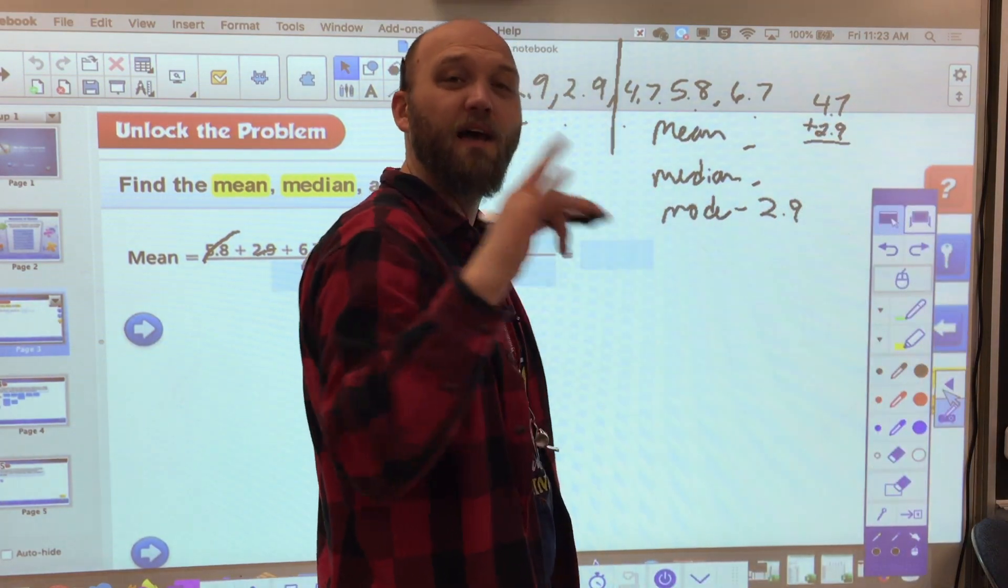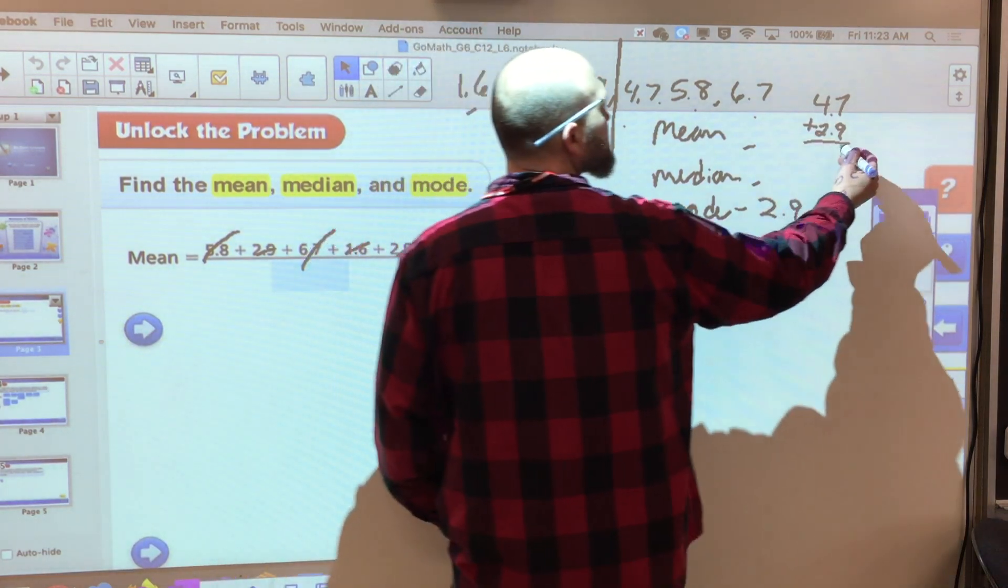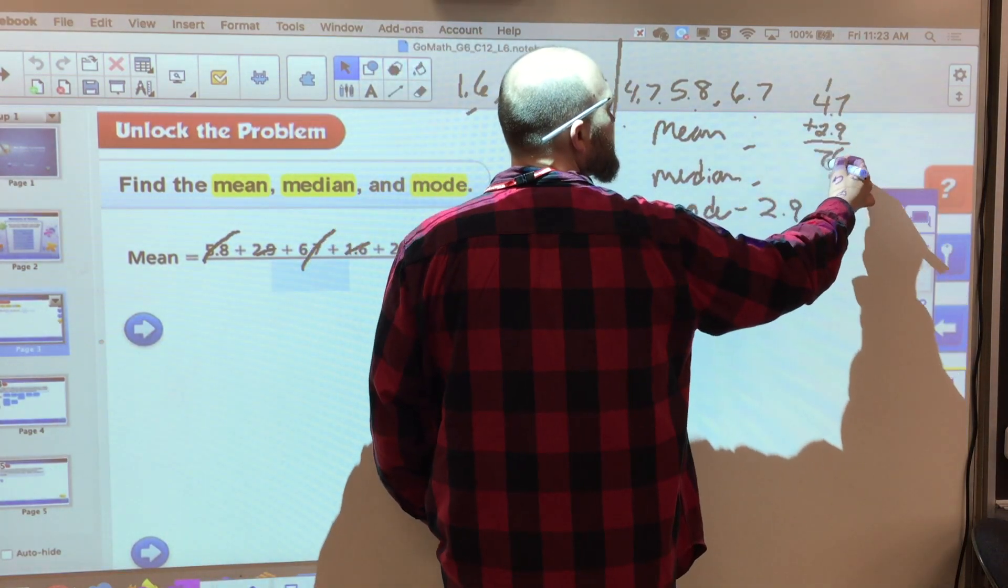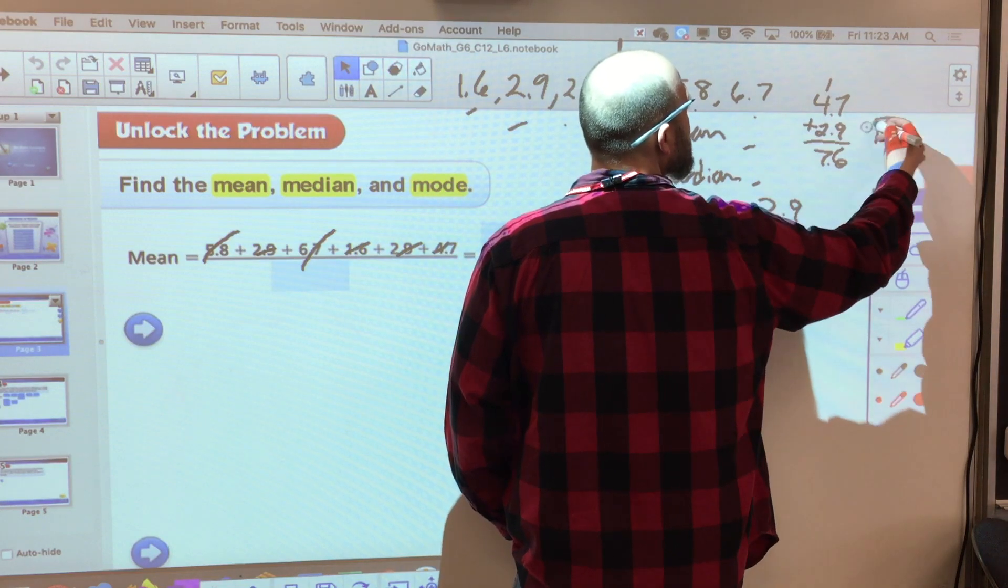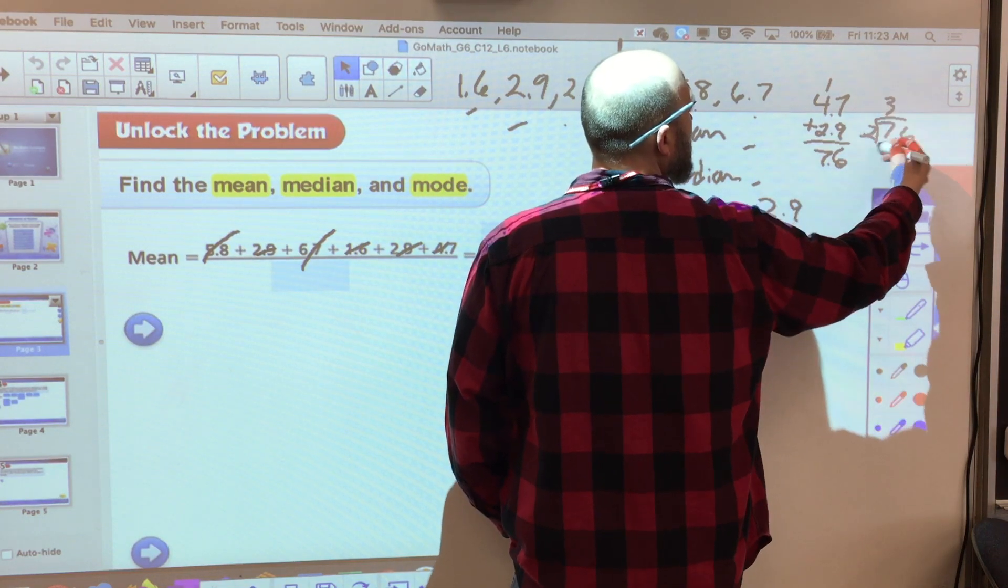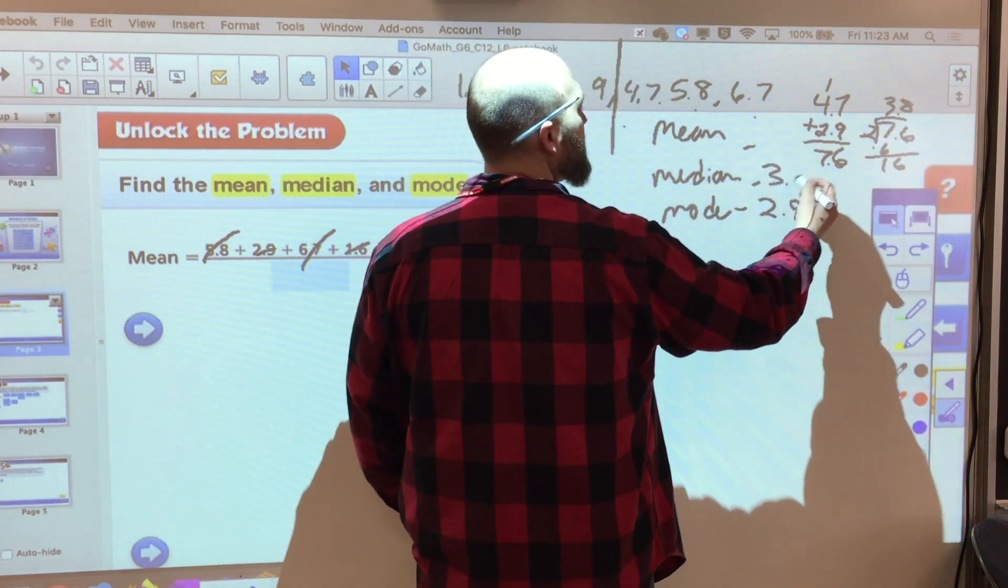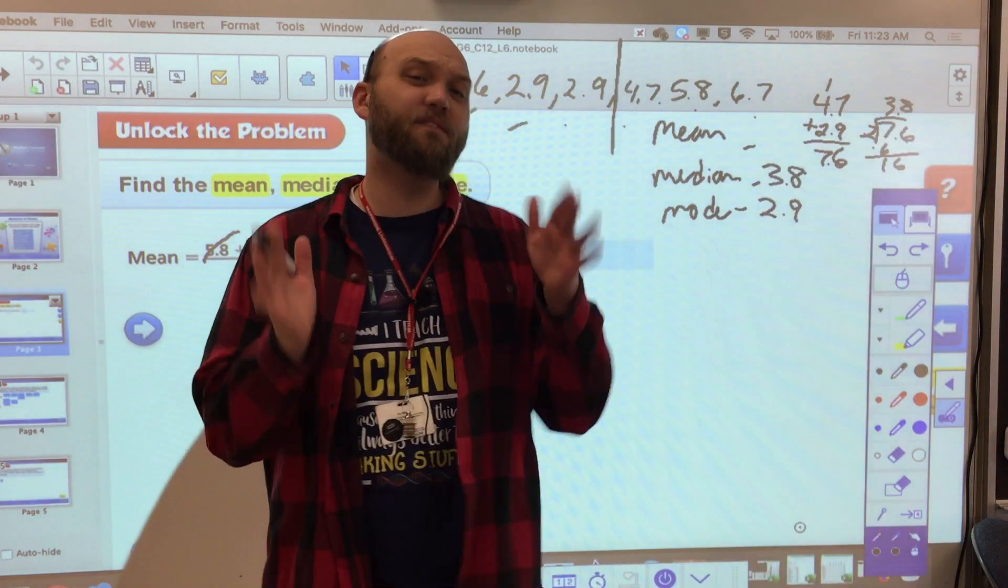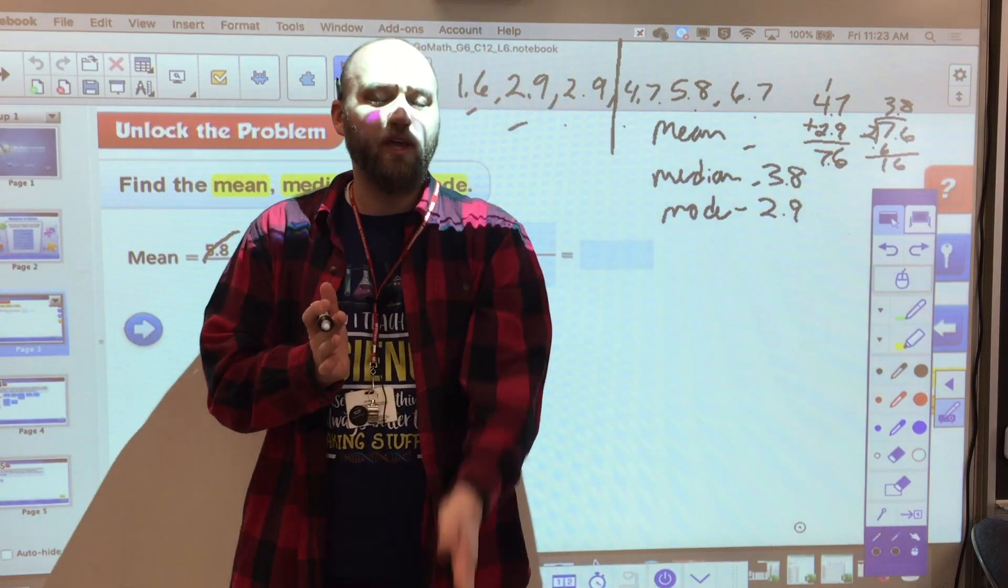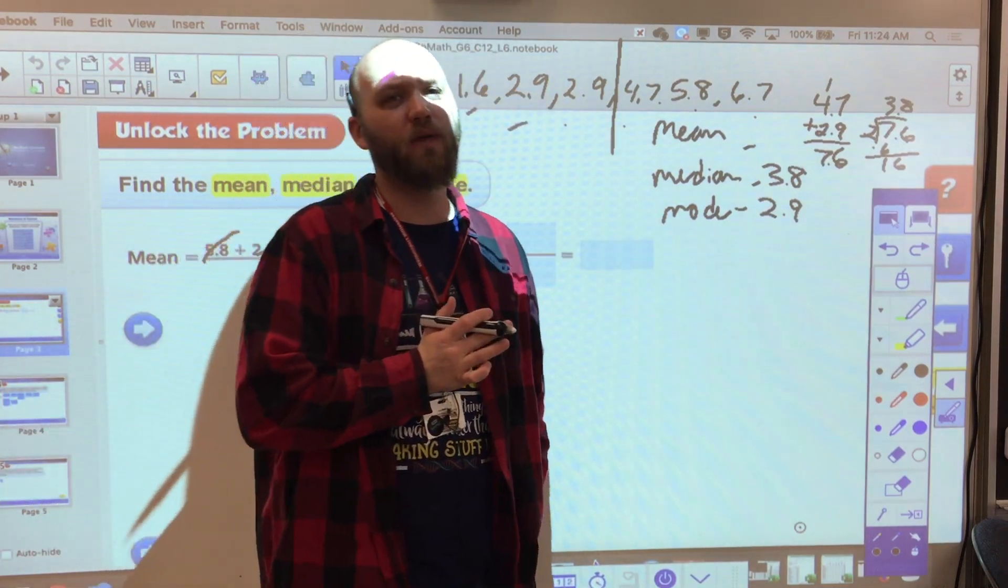16, 7.6, and 7.6 divided by 2, 3.8. So my median is 3.8. If I have an even number, I look at what's in between those two middle numbers.